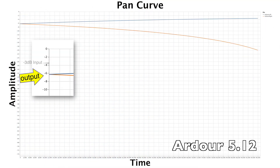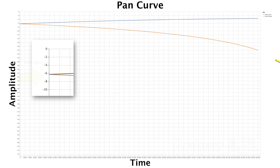Our DAW has a negative 3 decibel pan law and it compensates the opposing side; however, due to the interpolation of automation, the pan automation didn't finish in time.